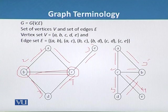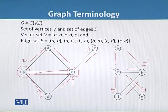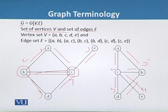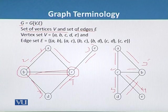We can denote a graph by G, and this G is equal to G(V,E), where V is the set of vertices and E is the set of edges.